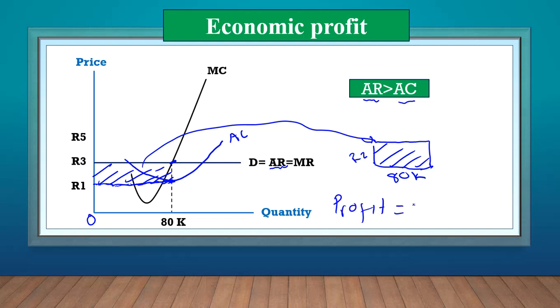So if we want to calculate the profit, the economic profit, it's going to have to be the length, which is 80K and multiplied by 2 rents. So then the profit in this case would be 160,000.